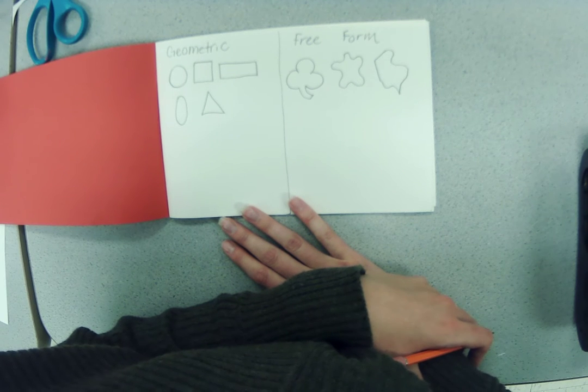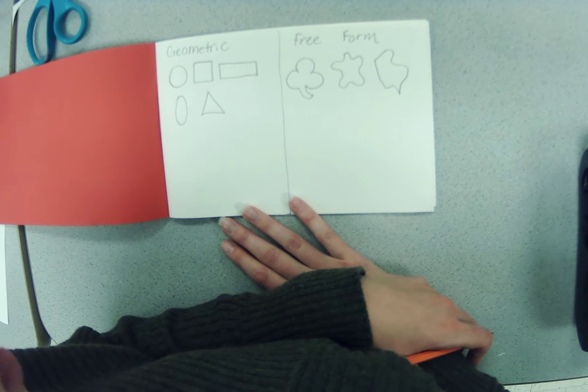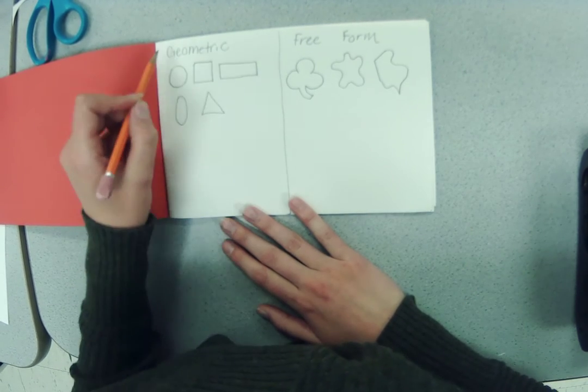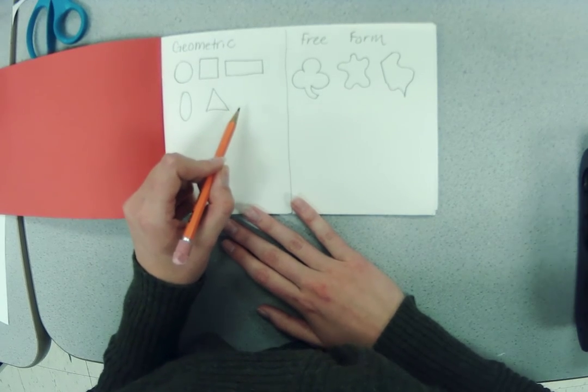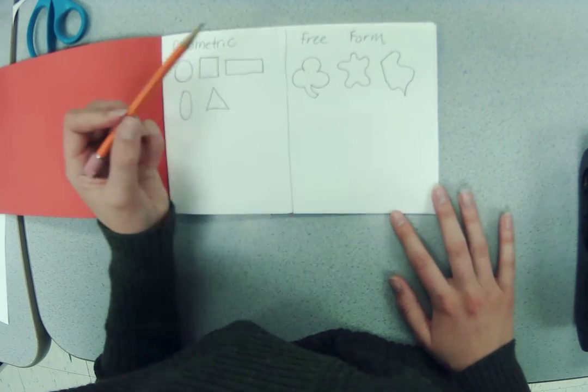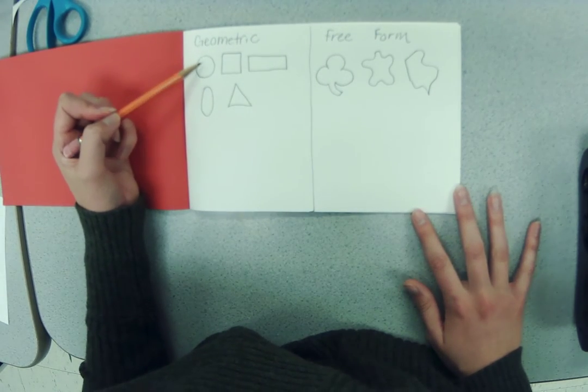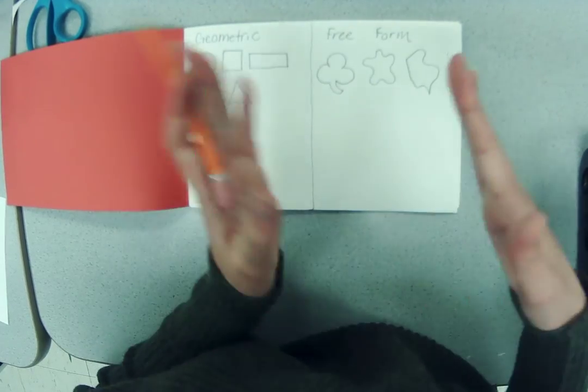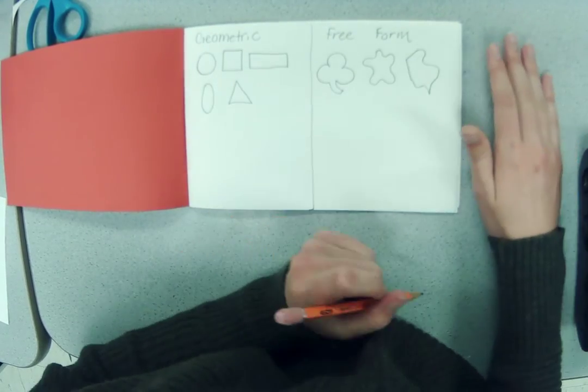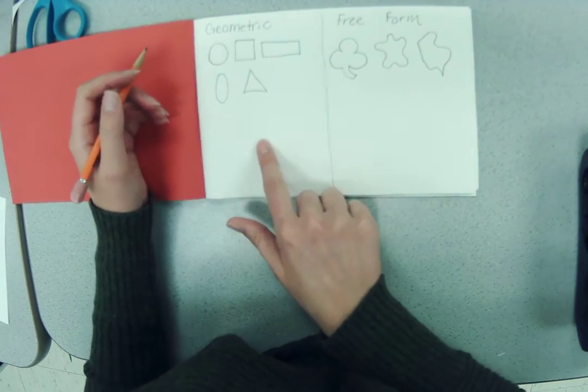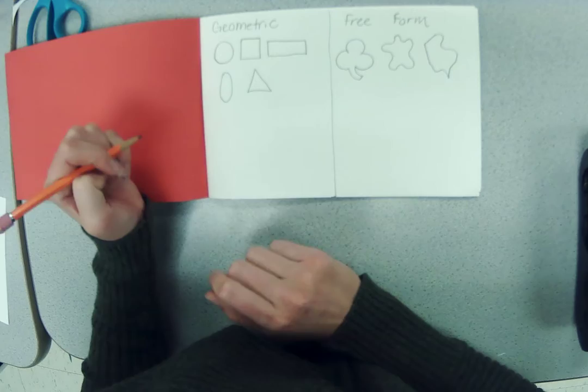So for our project, we're going to be creating buildings using geometric shapes and dinosaurs using our free-form shapes. Now for our city, our buildings would be made out of geometric shapes because if our buildings were made out of free-form shapes, they'd be really wobbly and they would not stand up nice and strong. So over here, we can practice drawing some buildings.